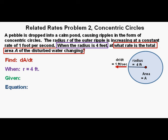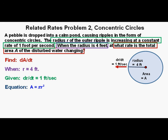And what are we given? We're given that the radius of the outer ripple is increasing at a rate of 1 foot per second. We call this given dR/dt equals 1 foot per second. And as an equation we get the area, or A equals π R squared. Now I believe we have everything we need.